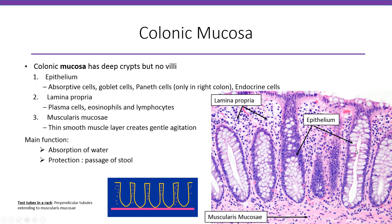The epithelium consists of goblet cells — notice all these mucin-filled cells with the nucleus at the base — as well as absorptive cells, which are the pink cells in between. You also have Paneth cells and neuroendocrine cells present in the colonic epithelium.